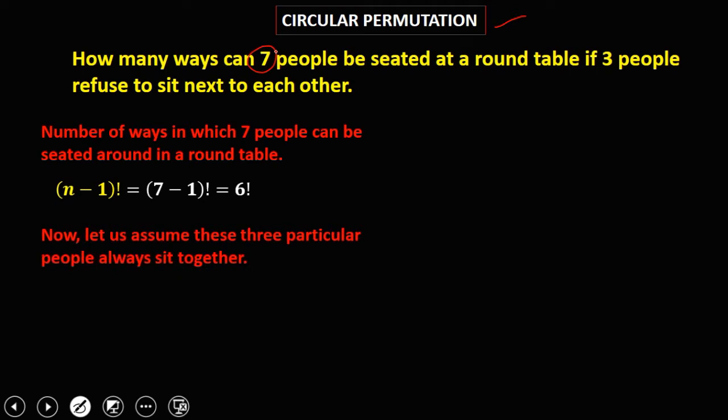Now let's assume that these 3 particular people always sit together. Since we have these 7 people - person A, B, C, D, and these 3 persons E, F, G always sit together - we only have 5 units in a round table. So the formula is (5-1)!.